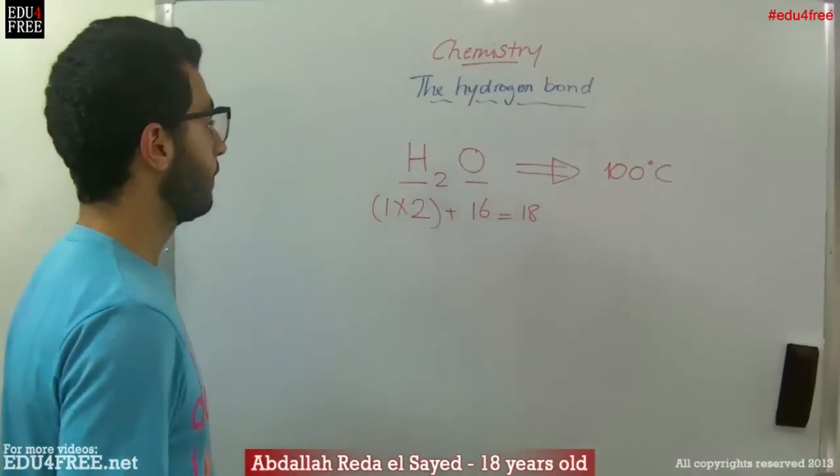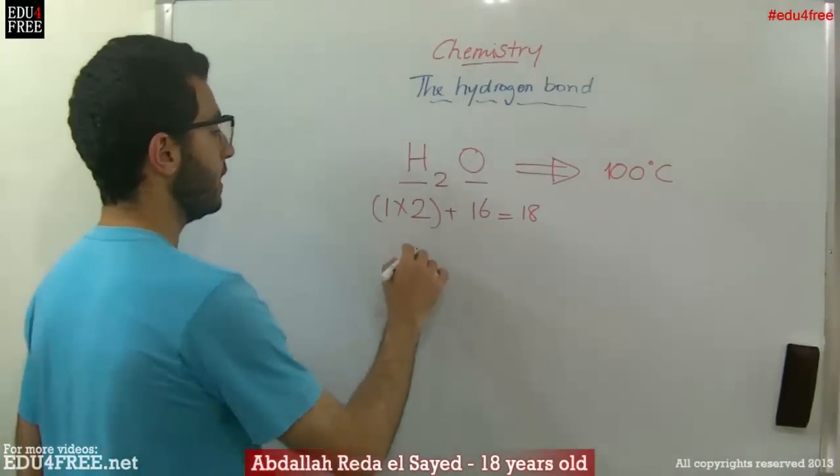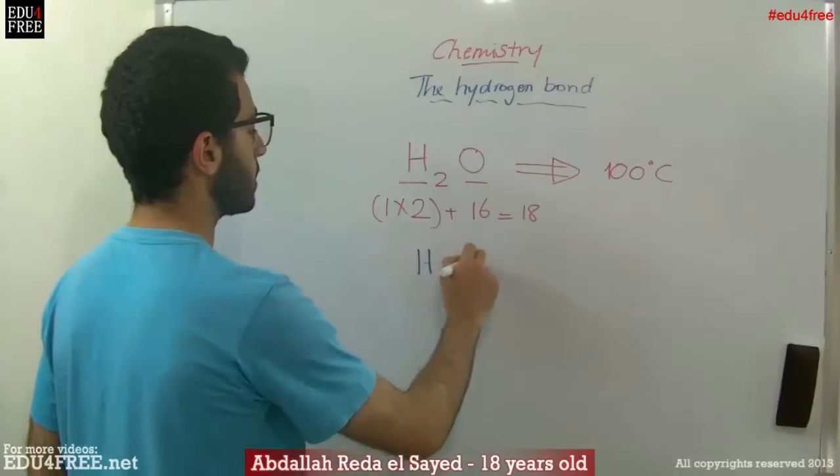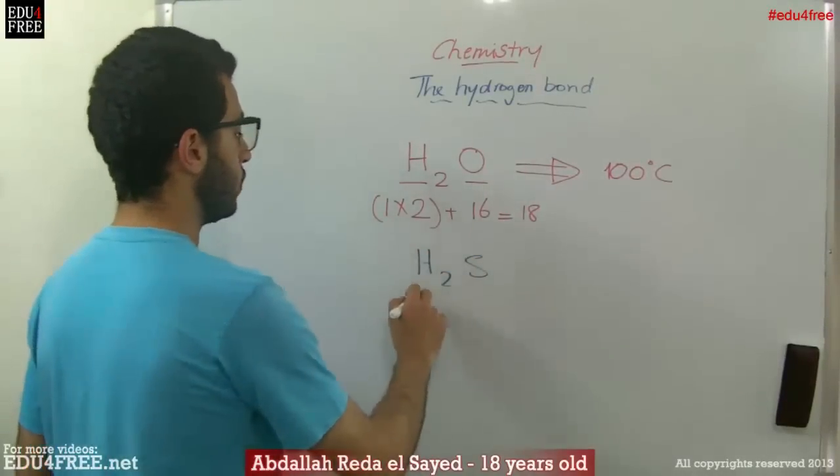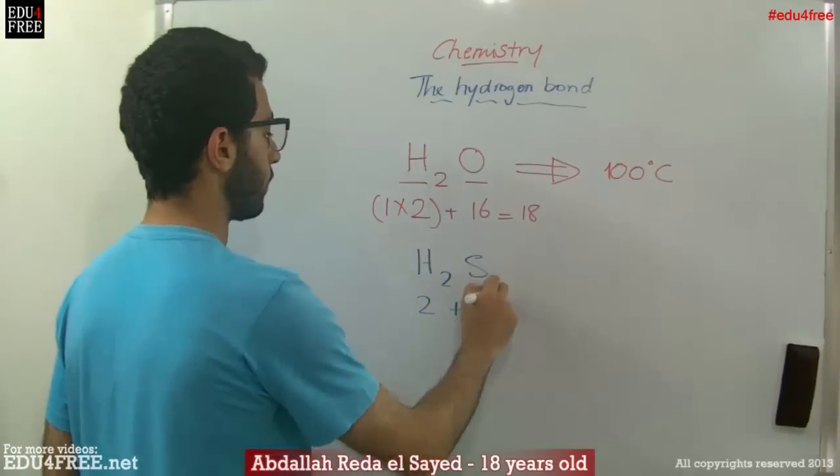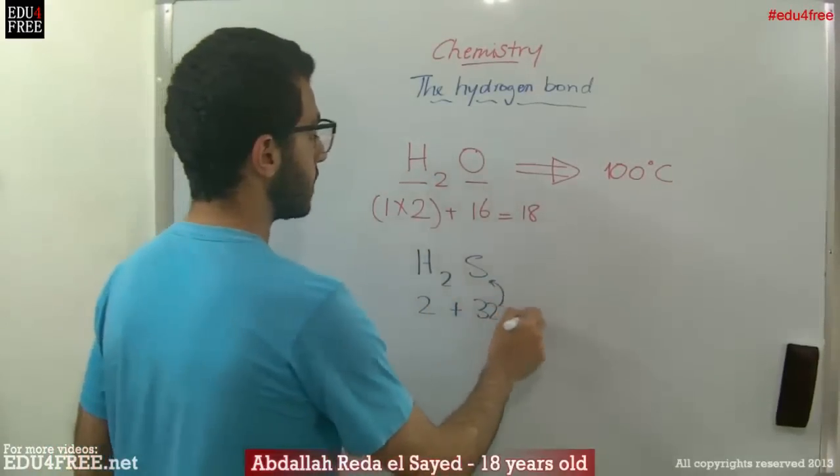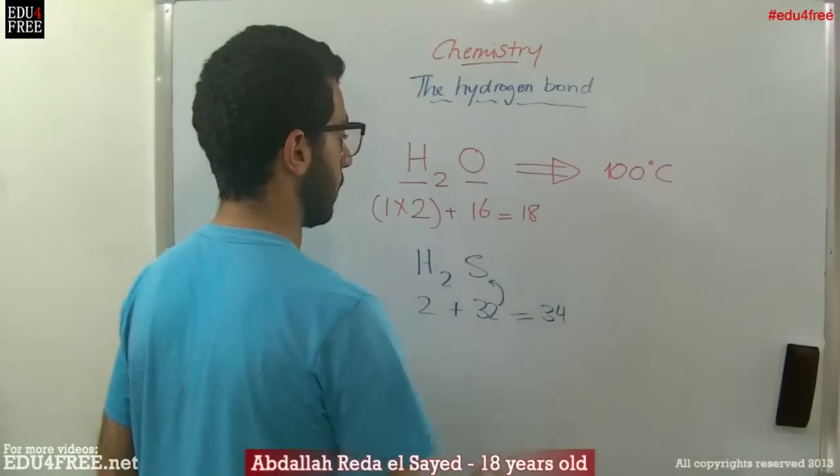If we take another atom, for example hydrogen sulfide H2S, we will have a molecular mass of 2 plus 32 for sulfur. This gives us 34 grams per mole.